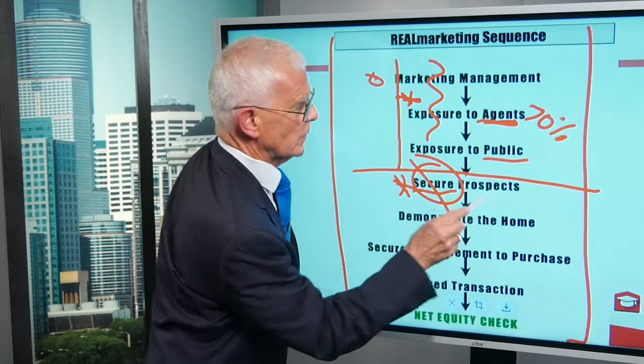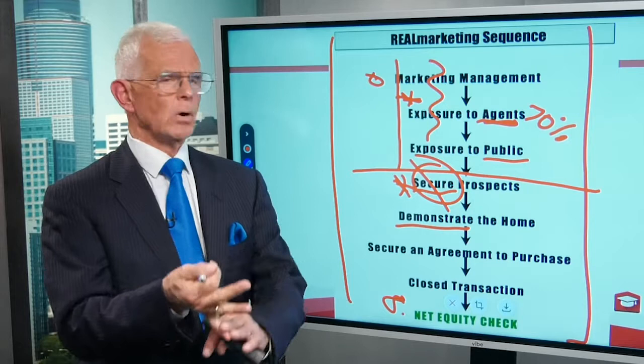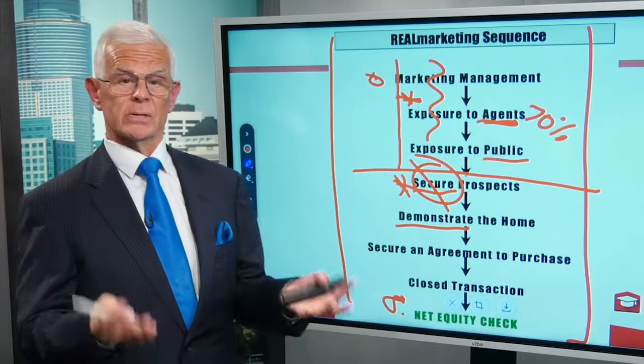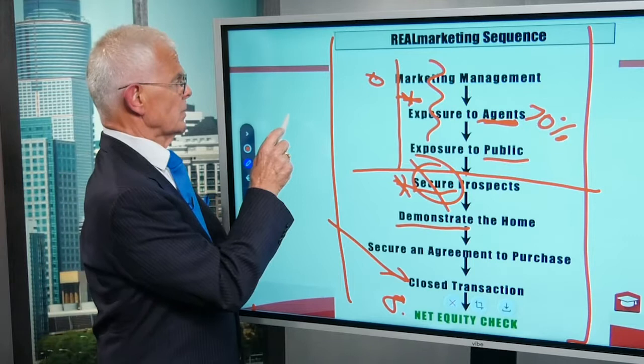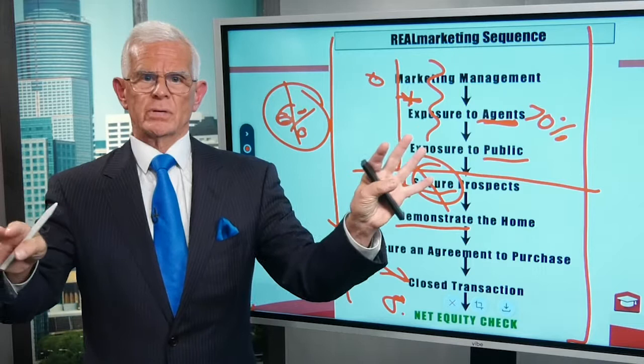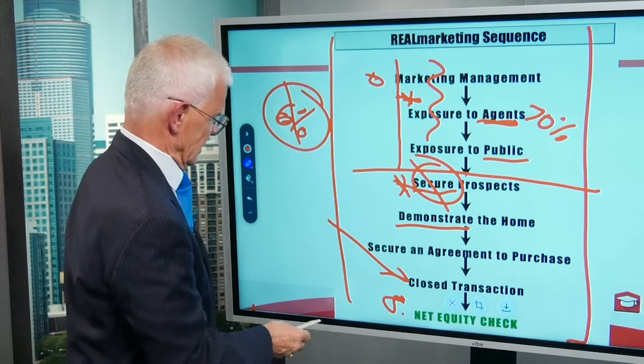And then demonstrate the home — another word for showing photos online, drone, aerial photography, whatever. We demonstrate it to the buyer and get them into the attitude of acceptance. Then we secure an agreement to purchase — obviously, get the signed contract. And now the closed transaction. You can say, 'Mr. and Mrs. Seller, six percent of transactions do not close because of mortgage, title, insurance, inspections, qualifying — all the things that can go wrong.' So you're also paying me not only to secure the transaction, but to get it closed. And that is critical. When you're done with this, they can see your value — all the stuff that goes into it.